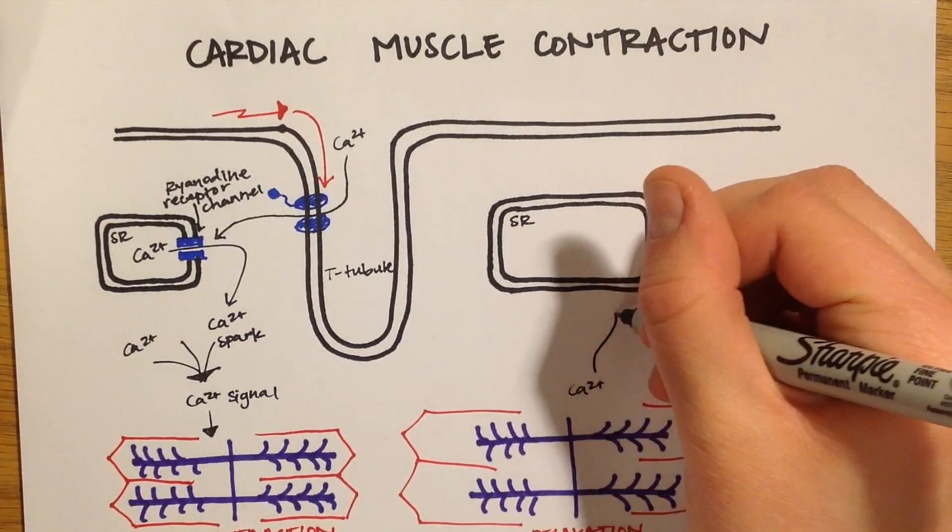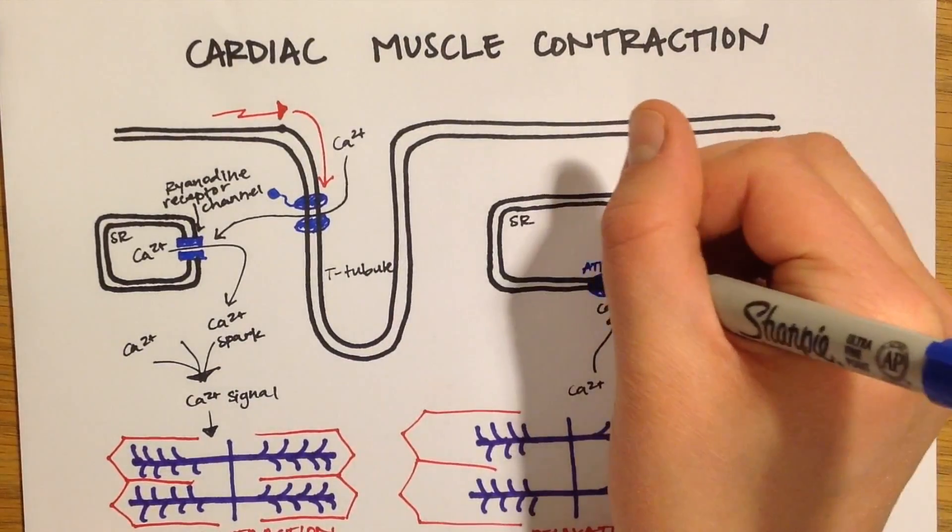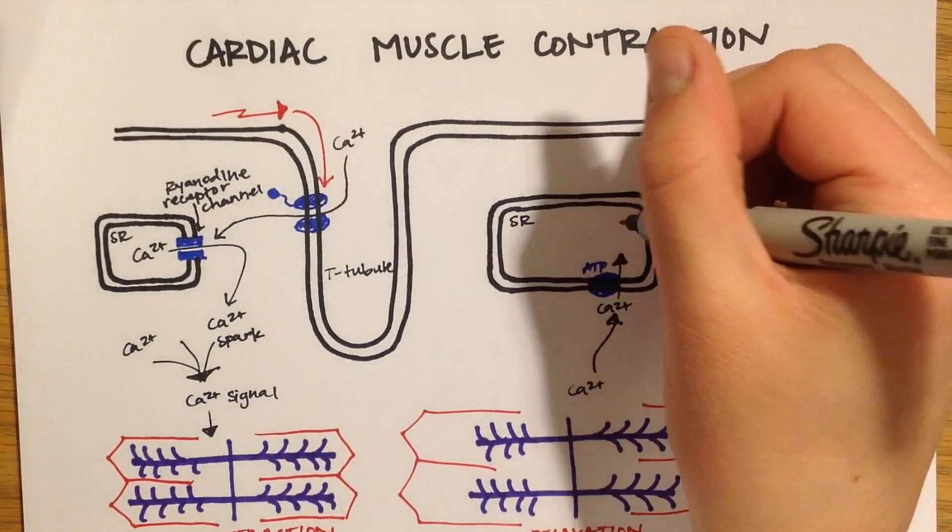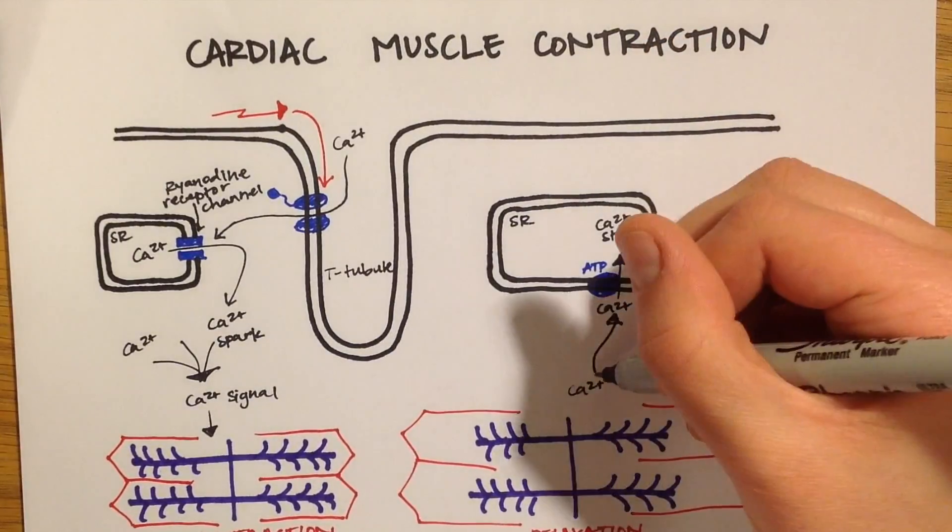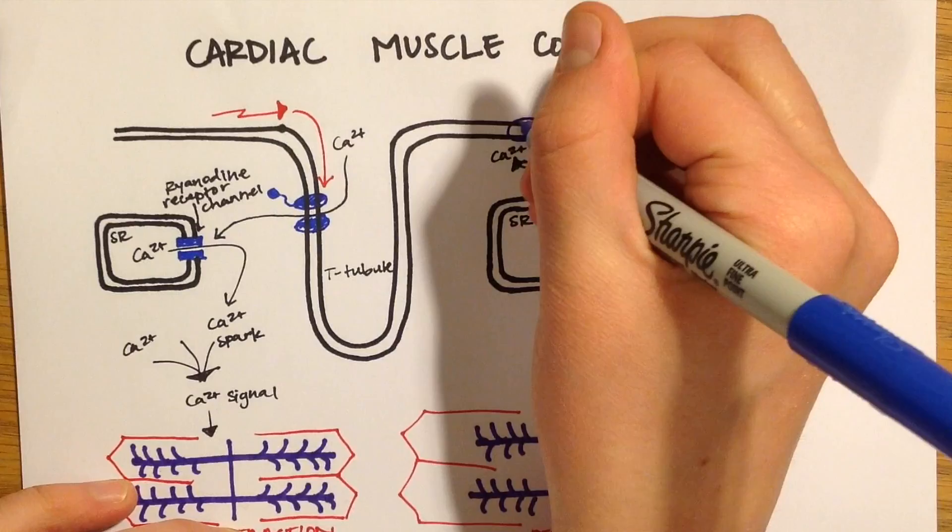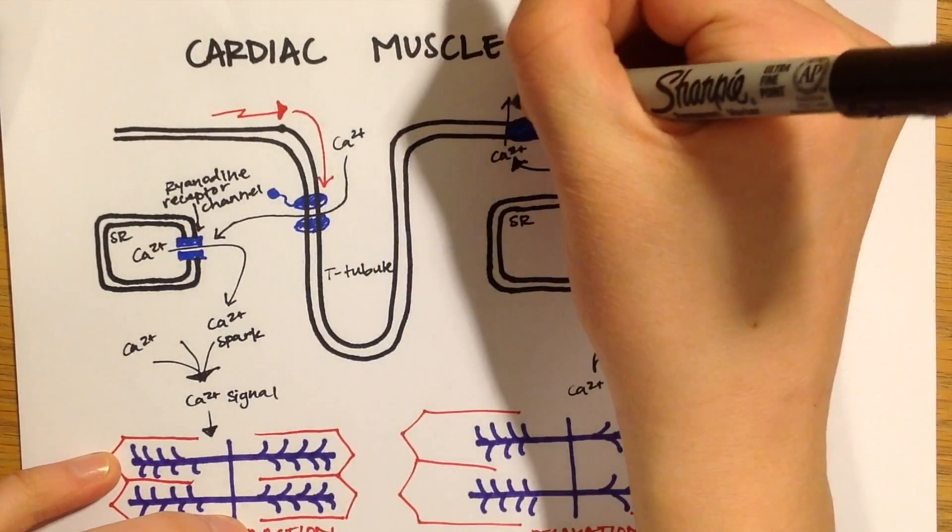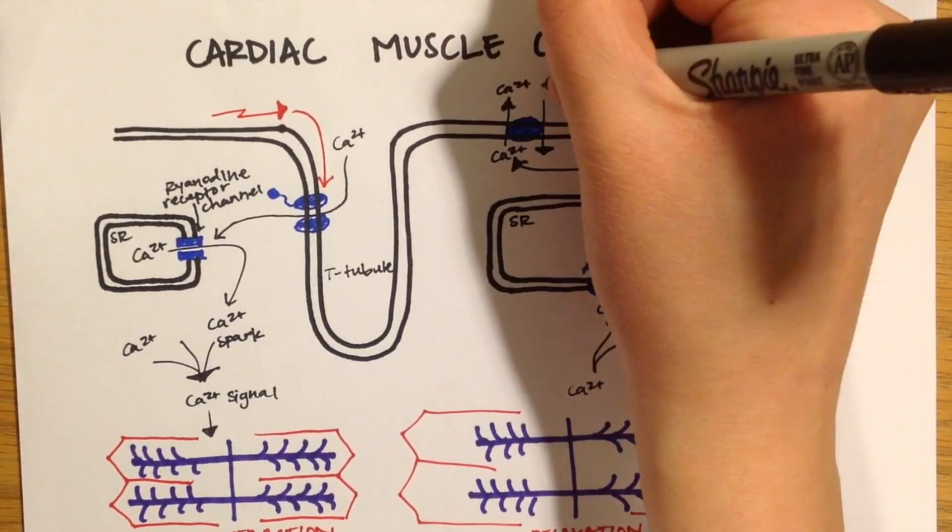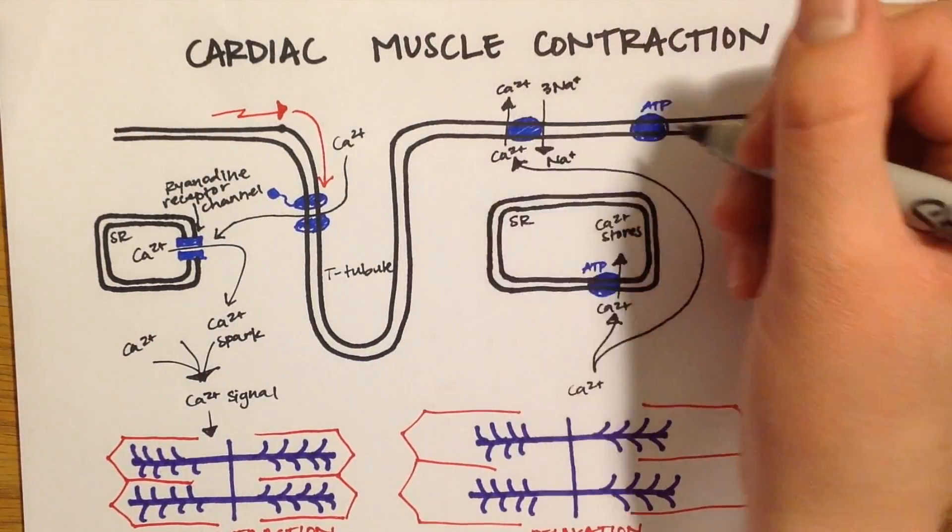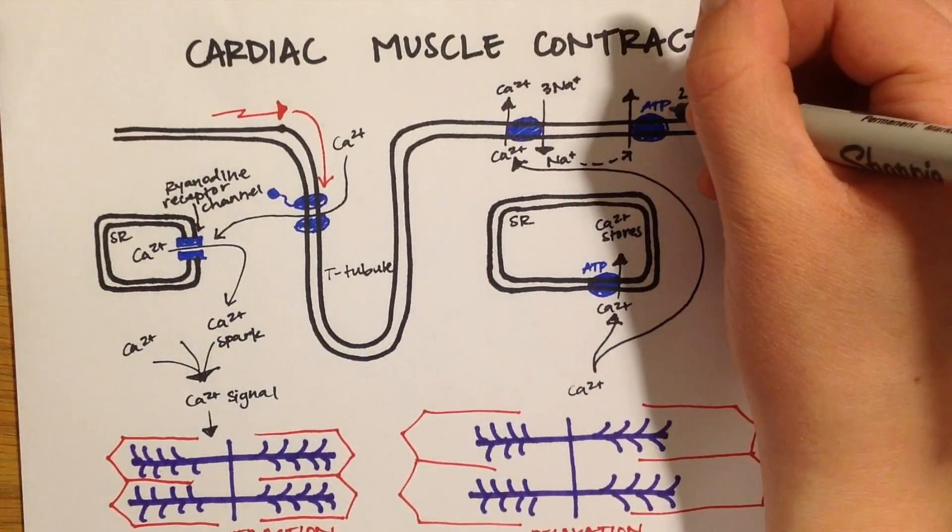So some of the calcium is pumped back into the sarcoplasmic reticulum for storage and another part of the calcium is exchanged out of the cell for the entrance of sodium. We'll show the pump here at the top so the calcium will be leaving the cell and then the sodium will be entering the cell. And then the sodium gradient will be maintained by the sodium-potassium ATPase pump.